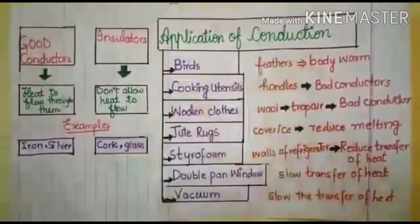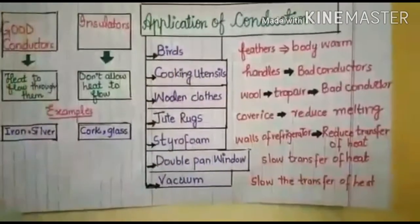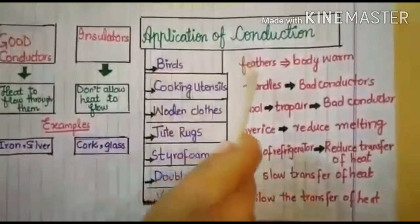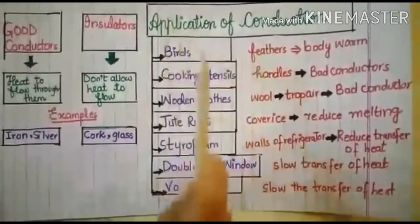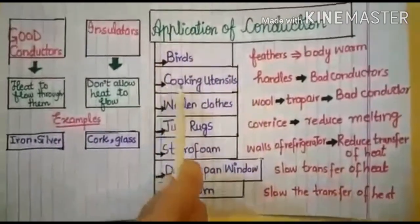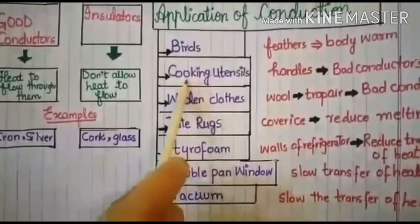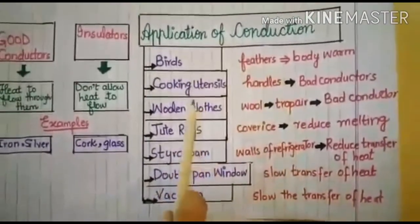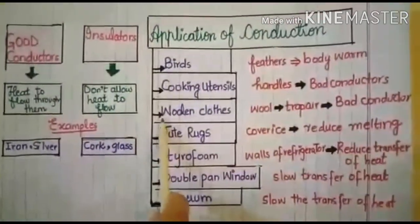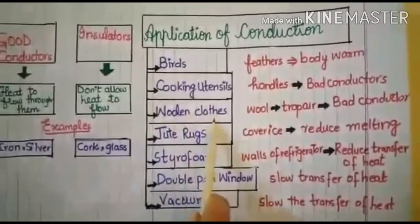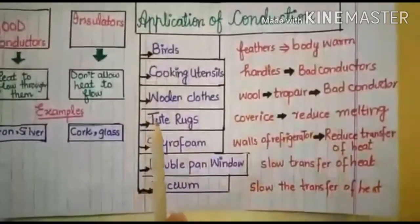Now we look at applications of conduction. First, in birds, the body is covered with feathers that keep their body warm — feathers are bad conductors of heat. Second, cooking utensils like kettles and pans used in kitchens have handles made of plastic and wood, which are bad conductors of heat. Third, in woolen clothes, wool traps air, and air is a bad conductor of heat.